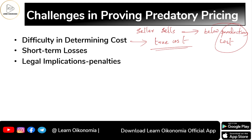In the initial period, the predatory firm incurs short-term losses. Referring back to firm D, it was reducing the price in the beginning to eliminate rivals, creating losses. Later it could recover and make profit, but short-term losses remain a problem. We must also consider the role of government.